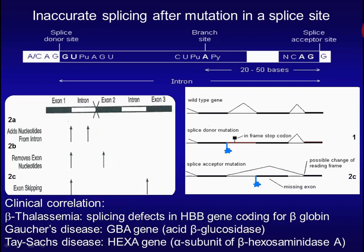Inaccurate splicing has clinical correlation. Beta-thalassemia — some cases are caused by splicing defects due to mutations in the splice site in the HBB gene. Other examples include Gaucher's disease and Tay-Sachs disease.